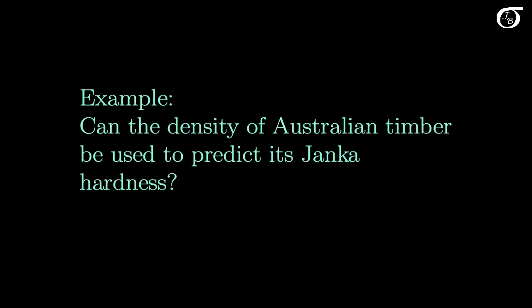Let's look at an example. Can the density of Australian timber be used to predict its Janka hardness? Janka hardness is a somewhat difficult variable to measure that involves the force required to push a ball bearing into a piece of wood, whereas density is an easier variable to measure. So if we can establish a relationship between these variables, maybe we can use the easy-to-measure variable of density to help us predict the hard-to-measure variable of hardness.